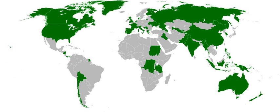An autonomous administrative division, also referred to as an autonomous area, entity, unit, region, subdivision, or territory, is a subdivision or dependent territory of a country that has a degree of self-governance or autonomy from an external authority.